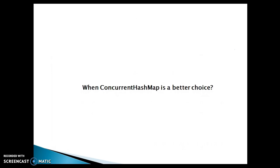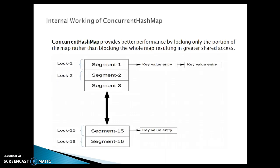Performance is further improved by providing read access concurrently without any blocking. Retrieval operations like get and other retrieval methods generally do not block, and may overlap with update operations. Read and write operations may overlap in a particular segment. Retrievals reflect the results of the most recently completed update operation, which means a retrieval operation may not see an in-progress value — that is one drawback.